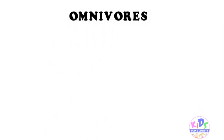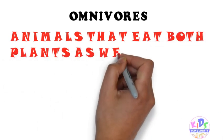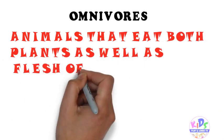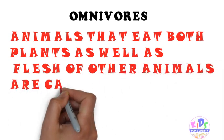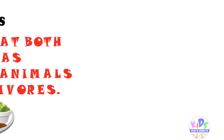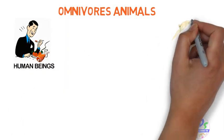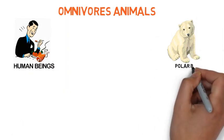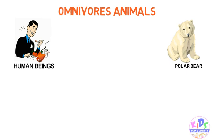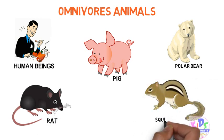The third type of animals are omnivores. Animals that eat both plants as well as the flesh of other animals are called omnivores. Examples of omnivores are human beings, polar bear, brown bear, pig, rat, squirrel, and many more.